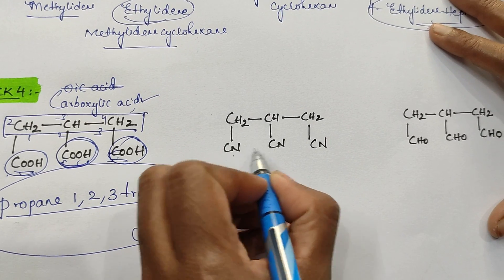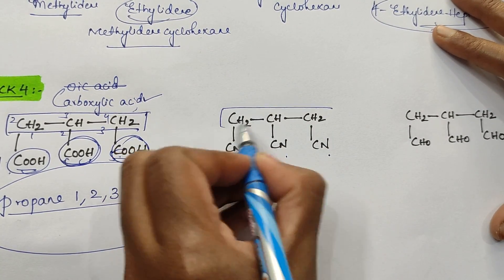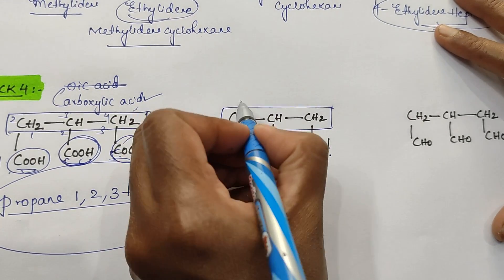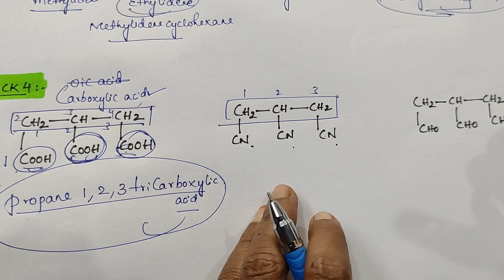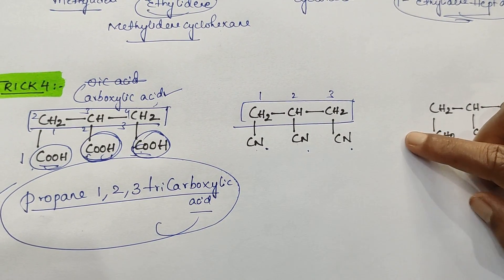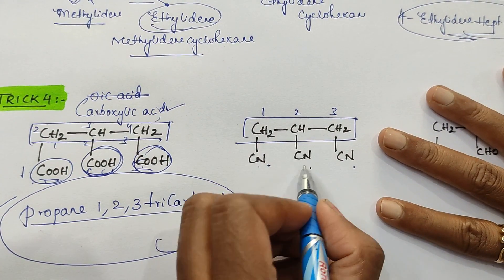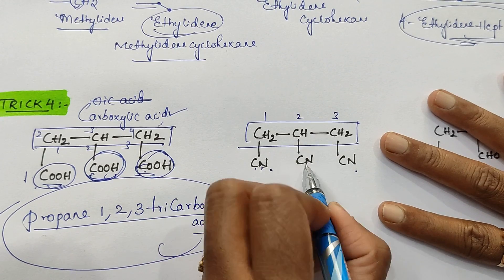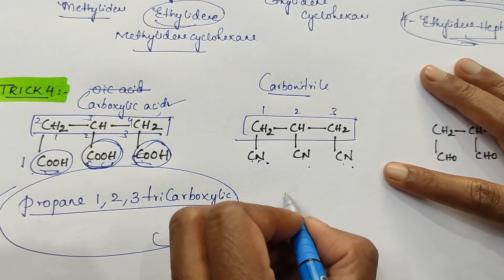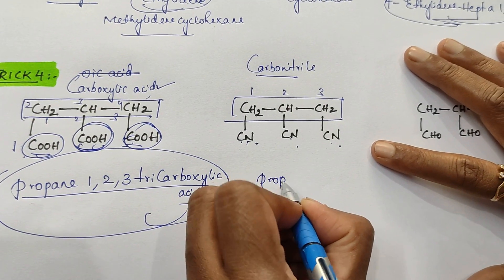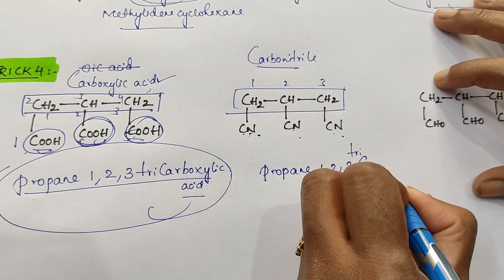When more than two nitrile groups are there, you should not include them in the parent chain. You have to consider this as your parent chain: 1, 2, 3. If normally two or one is there, you have to use nitrile as your secondary suffix. But in this case, these three become carbonitrile. You have to use carbonitrile. Then its name is propane-1,2,3-tricarbonitrile.